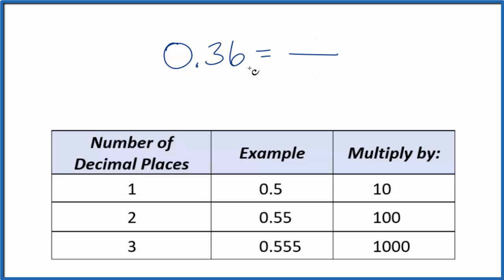We can think of it like this: 0.36, we could call that 0.36 over 1. Since we're just dividing by 1, we haven't changed anything, we'll have the same value. But now we have the start of a fraction.